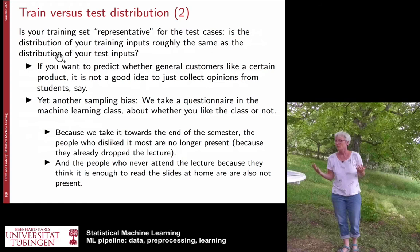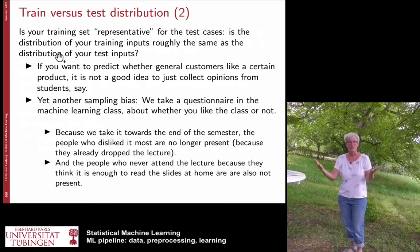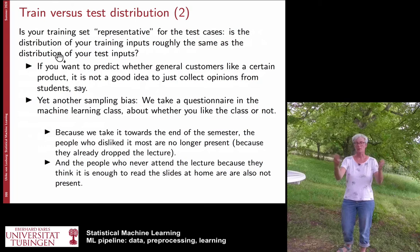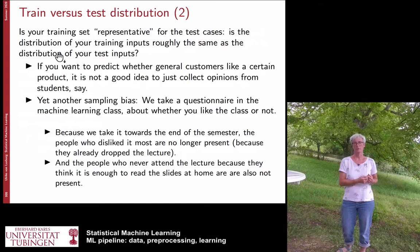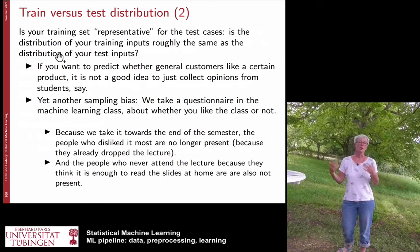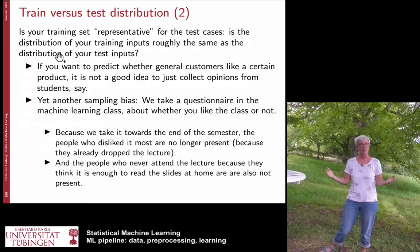For example, if you want to predict whether certain customers like a product and you do a questionnaire with students, you haven't covered all your customers. Another example of sampling bias: lecture midterm evaluations. Most evaluations aren't really bad — but that may not be surprising because students who really didn't like the lecture have already left by midterm. So there's a strong sampling bias towards positive evaluations, which makes it hard to predict dropout rates from midterm data.